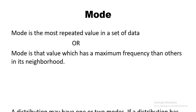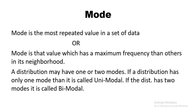The mode is the most repeated value in a set of data. A distribution may have one or two modes. If a distribution has one mode, it is called unimodal. If the distribution has two modes, it is called bimodal — meaning two values are repeated equally in the data, so both values are the mode.